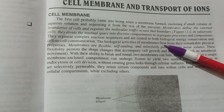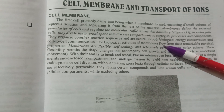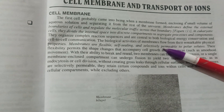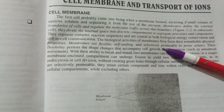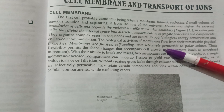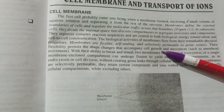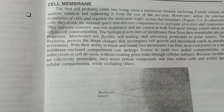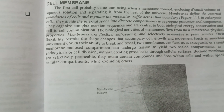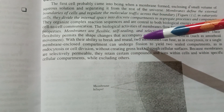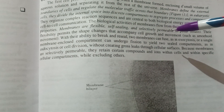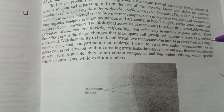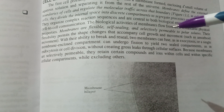The biological activities of cell membrane stem from their remarkable physical properties. The membrane is flexible, self-sealing, and selectively permeable to polar solutes. This flexibility permits shape changes that accompany cell growth and movement, and with their ability to seal, two membranes can fuse in exocytosis and a single membrane can close a compartment.